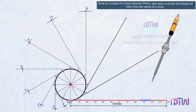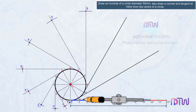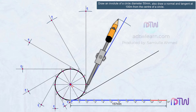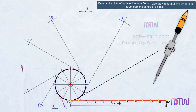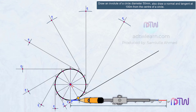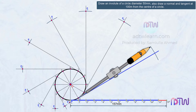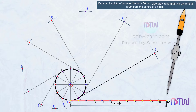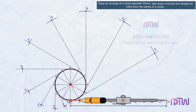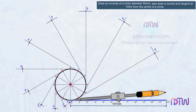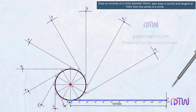Next, take the distance between point 10' to P and using point 10 as a reference, mark an arc — name this point P10. Next, take the distance between point 11' to P and using point 11 as a reference, mark an arc — name this point P11. At last, take the distance between point 12' to P and using point 12 as a reference, mark an arc — name this point P12.